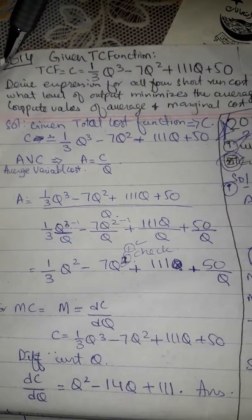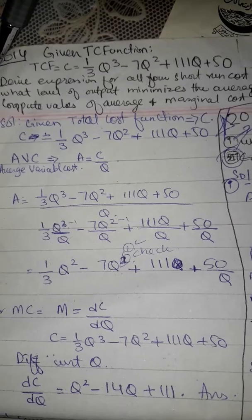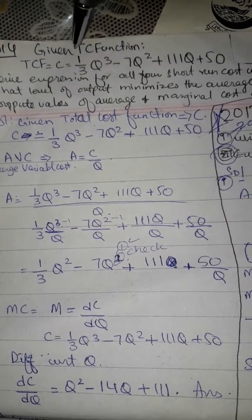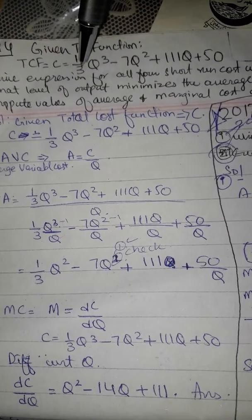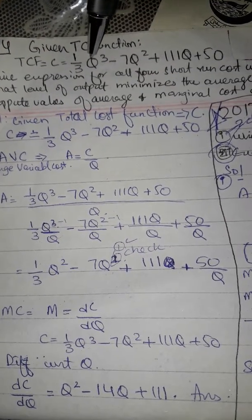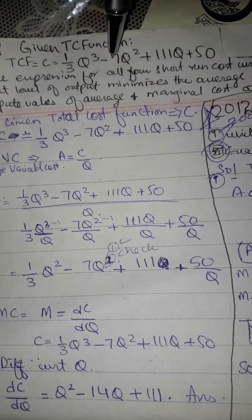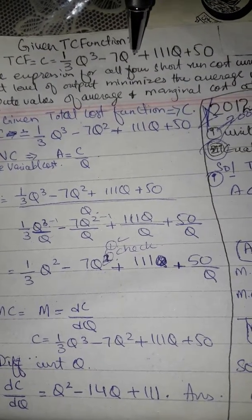The 2014 question gives TC function equal to one-third q³ minus seven q² plus...